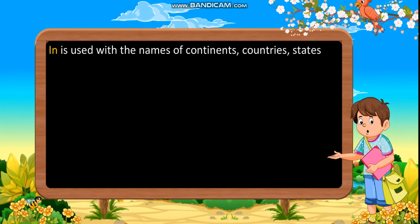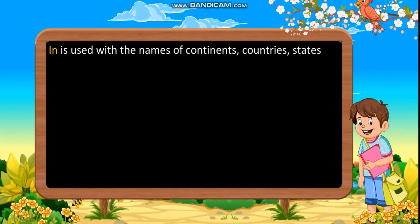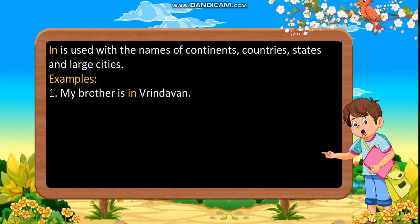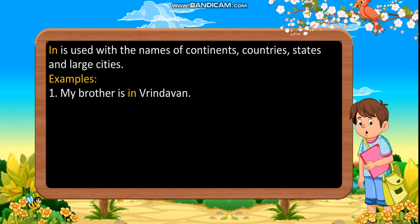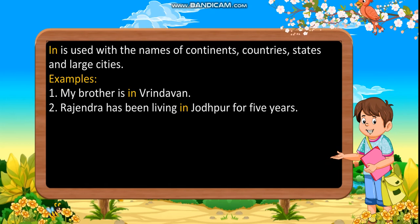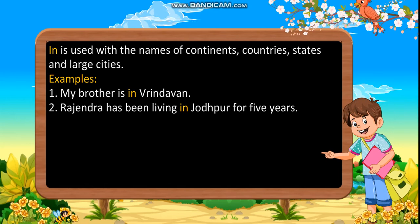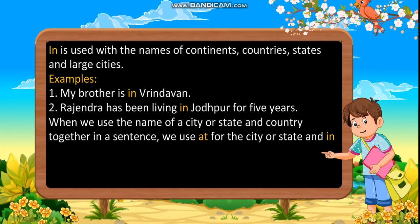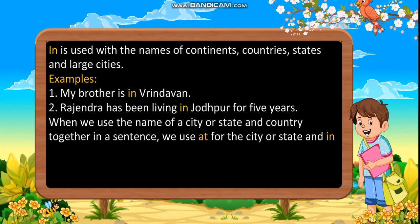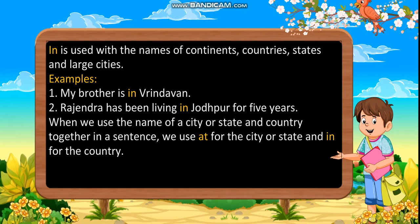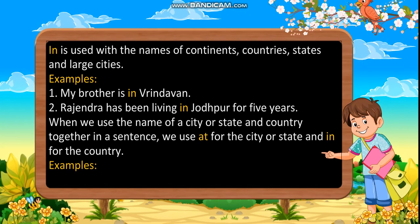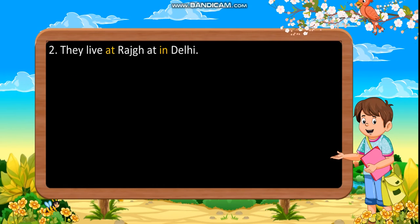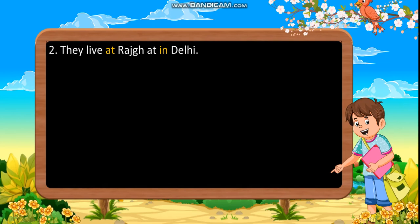In is used with the names of continents, countries, states, and large cities. Examples: first, my brother is in Vrindavan. Second, Rajendra has been living in Jodhpur for five years. When we use the name of a city or state and country together in a sentence, we use at for the city or state and in for the country. Examples: first, I met her at New York in the USA. Second, they live at Rajghat in Delhi.